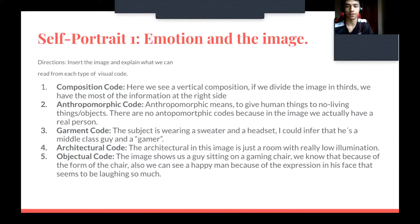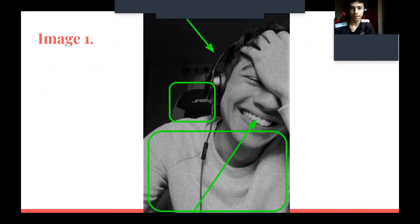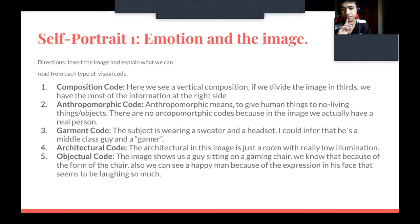There are no anthropomorphic codes because in this image we actually have a real person. The third code is the garment — the subject is wearing a shirt and a headset, from which I could infer that he's a middle-class guy.